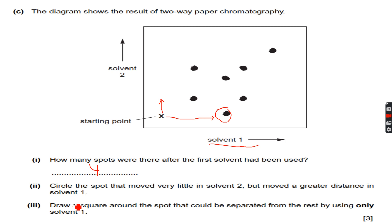The third part asks draw a square around the spot that could be separated from the rest by using only solvent 1. So they said that solvent 2 was not necessary. That will be this spot because if you see, these two were overlapped with solvent 1 so we had to use solvent 2, these two were overlapped with solvent 1 so we had to use solvent 2, these two were overlapped with solvent 1.